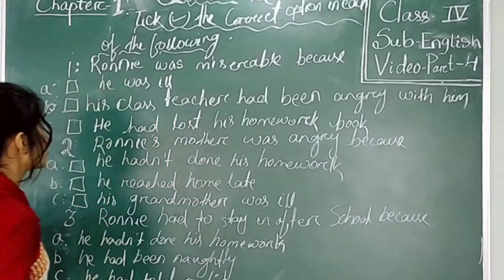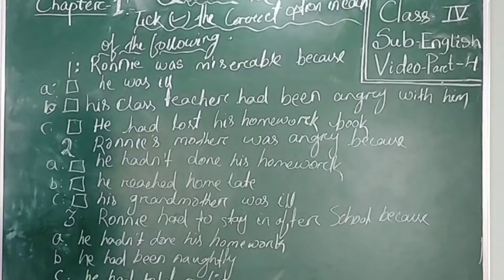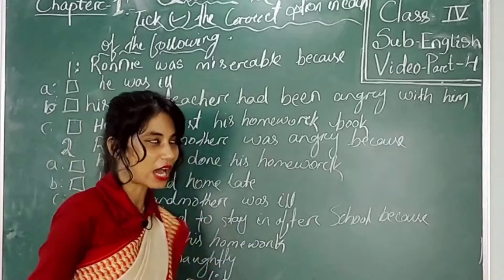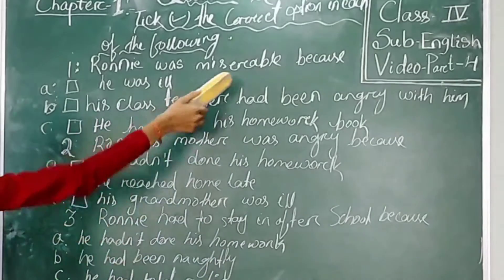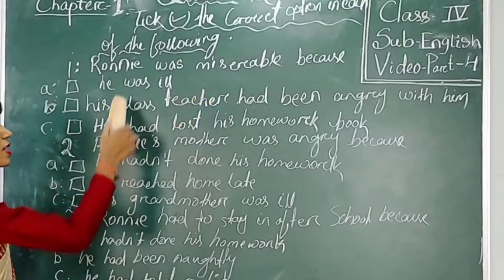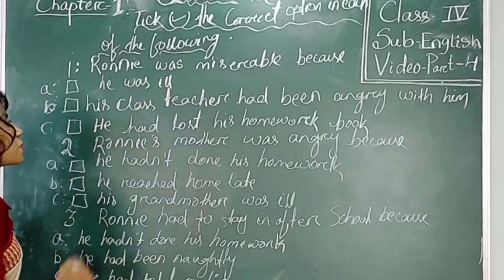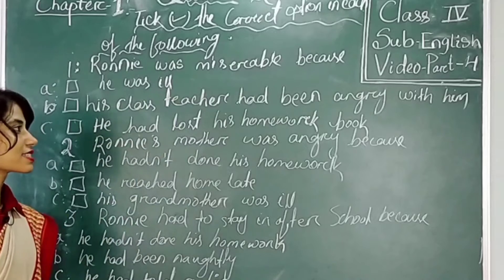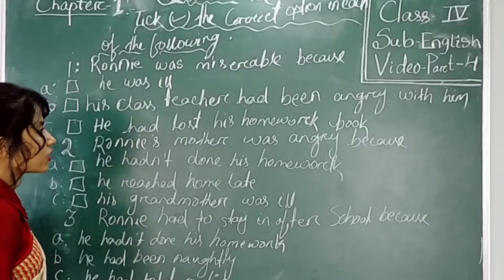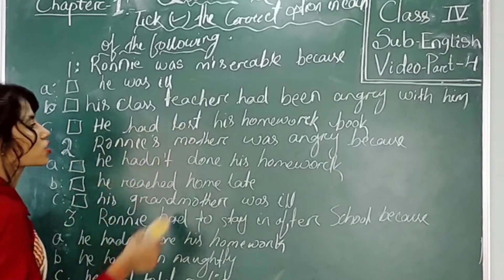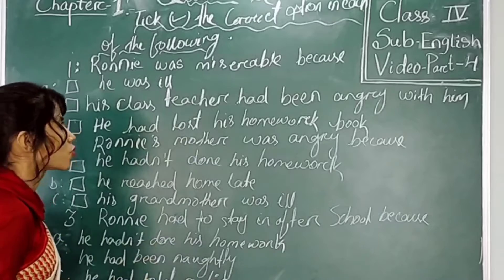First question: the blackboard has written — Ronin was miserable because. The meaning of miserable is very unhappy. So, Ronin was miserable because: option A — he was ill; option B — his class teacher had been angry with him; option C — he has lost his homework book.